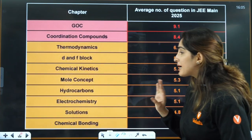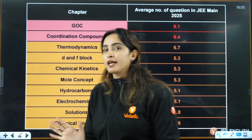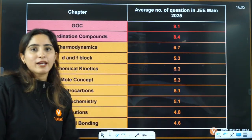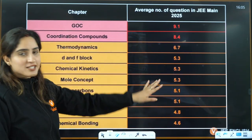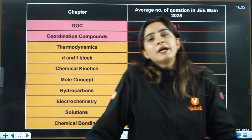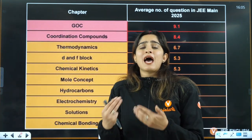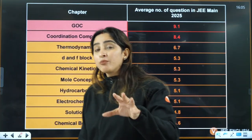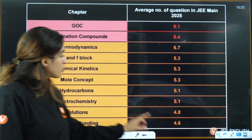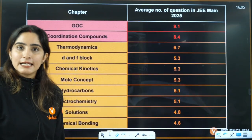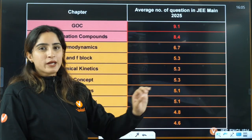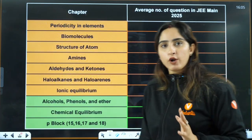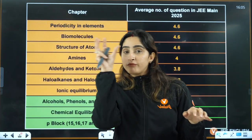From chemical bonding, don't skip anything. You might see it listed as lower priority while coordination chemistry is higher, but in 2026 they can interchange — both are similar chapters. Maybe in 2025 they gave more priority to coordination; in 2026 they may give more to chemical bonding. That's why don't skip anything from either chemical bonding or coordination chemistry.